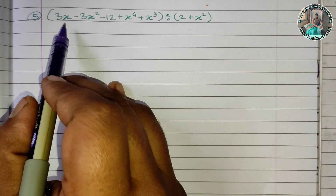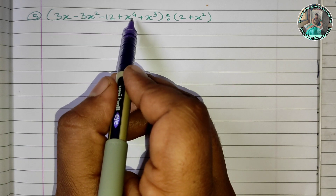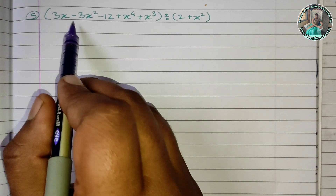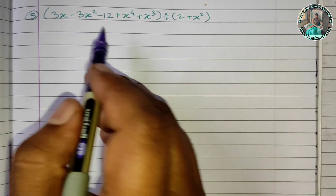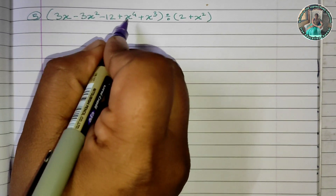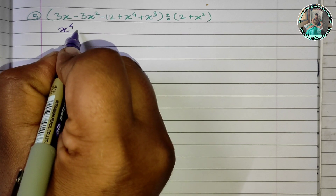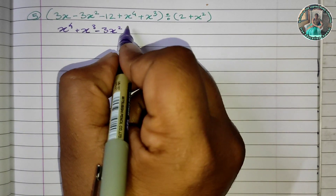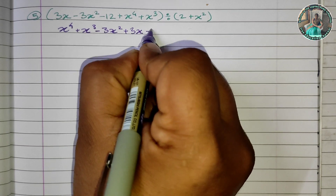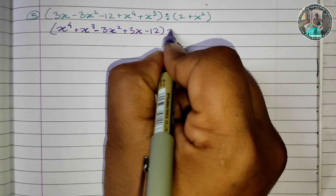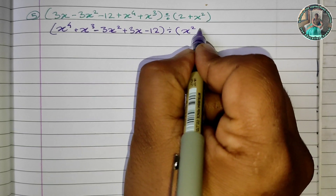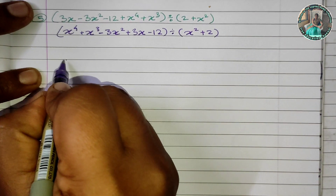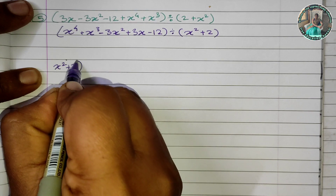The 5th question is: 3x minus 3x squared minus 12 plus x raised to 4 plus x cubed, divided by 2 plus x squared. We need to arrange this in descending order of degree. So we re-arrange: x raised to 4 plus x cubed minus 3x squared plus 3x minus 12, divided by x squared plus 2.